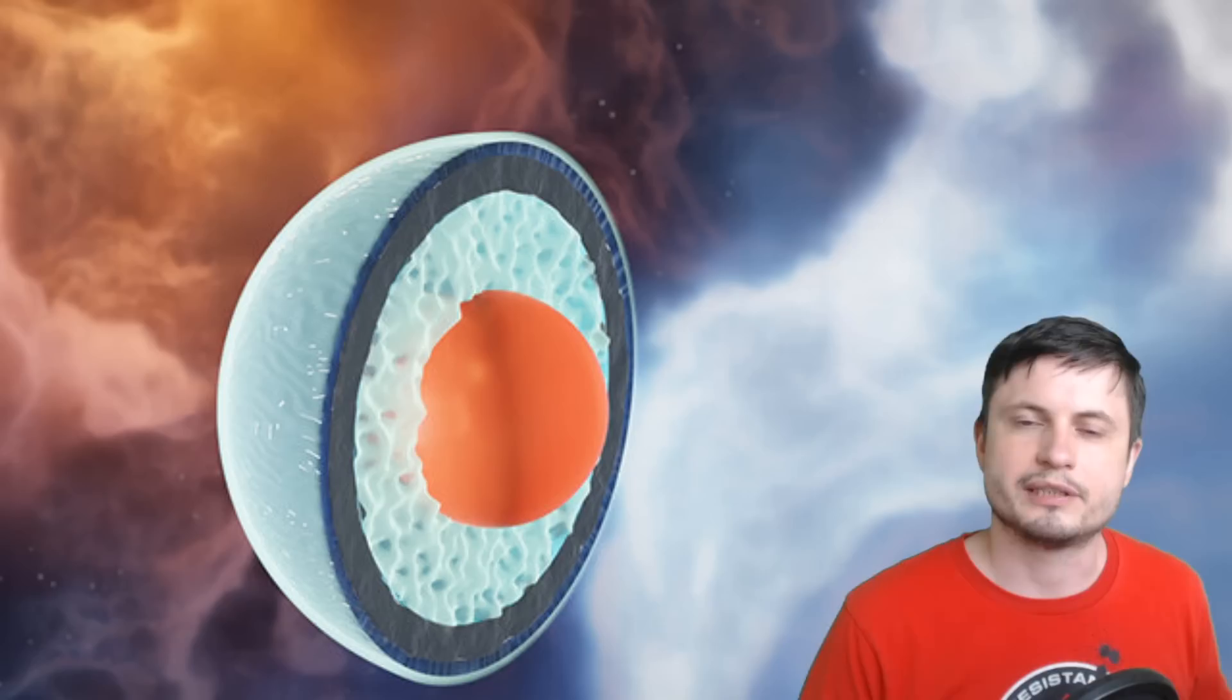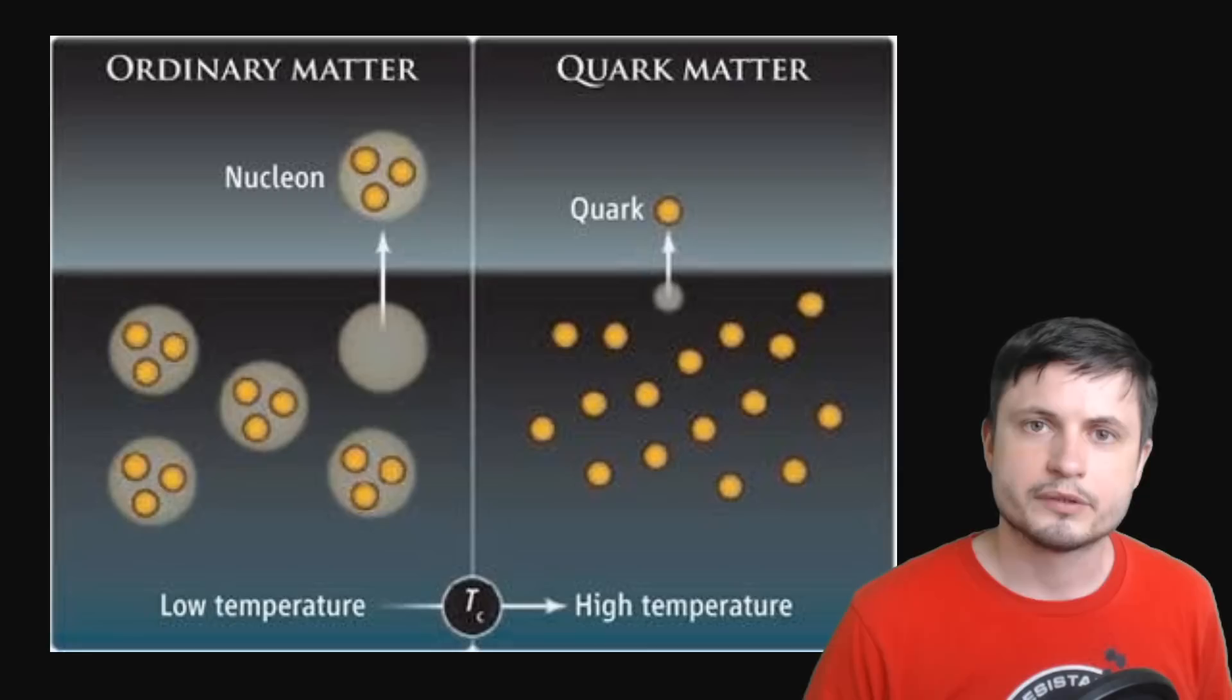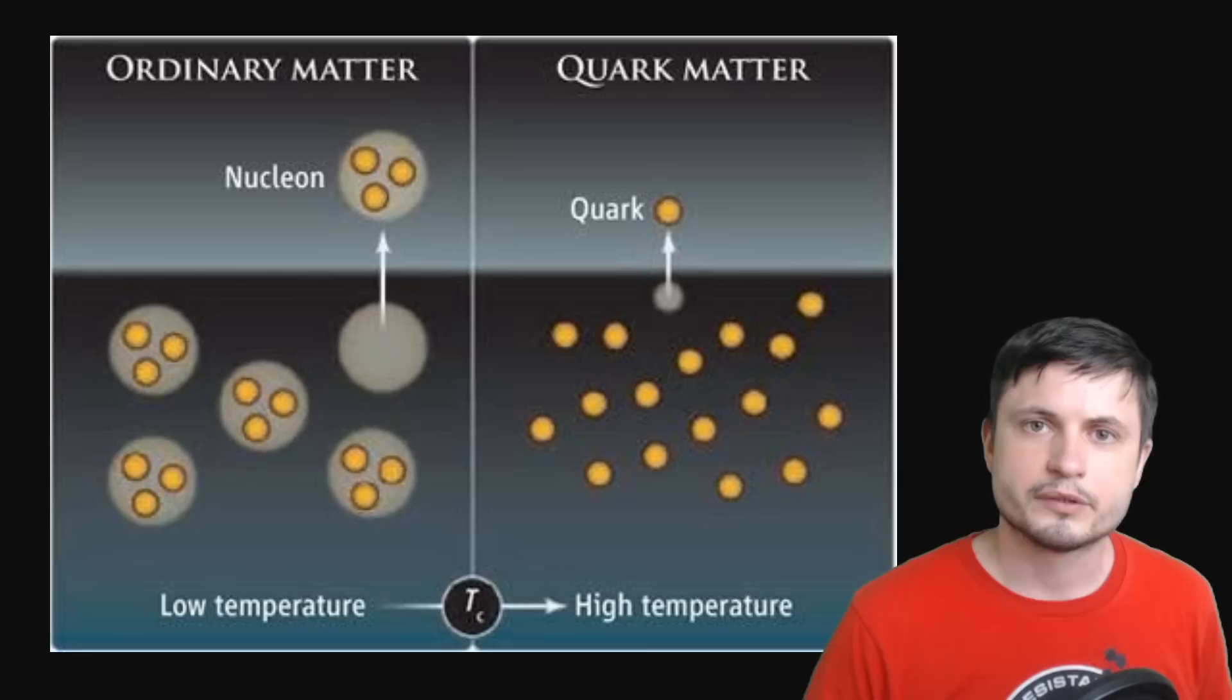But hypothetically, if this quark matter is real, it will always be formed in extremely high temperature conditions and also extremely high density or pressure conditions. So a neutron star is a perfect place to find these unusual formations.